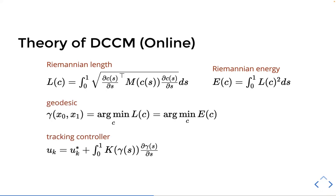And then the geodesic is basically the curve that minimizes these quantities. And once we have the geodesic, then we can define our tracking controller as the nominal input plus the integral of the geodesic multiplied by the gain matrix.